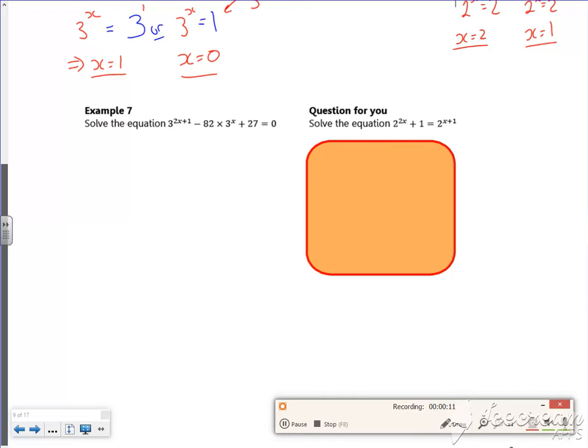Right, I've got to see it as a quadratic, which means that I need 3^(2x) to mess around with. I've got 3^(2x+1), so I need 3^(2x), but I've got 3^(2x+1).